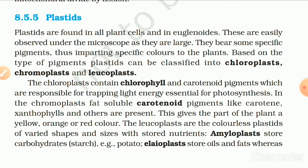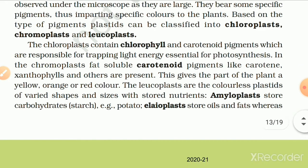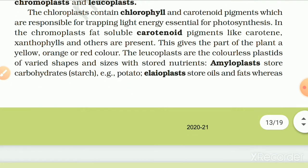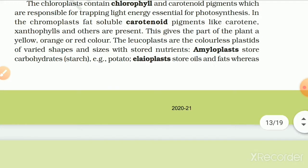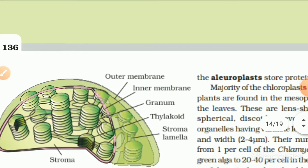8.5.5 Plastids. Plastids are found in all plant cells and in euglenoids. They are easily observed under the microscope as they are large and bear specific pigments imparting specific colors. Based on the type of pigment, plastids can be classified into chloroplasts, chromoplasts and leucoplasts. Chloroplasts contain chlorophyll and carotenoid pigments, which are responsible for trapping light energy essential for photosynthesis. In chromoplasts, fat-soluble carotenoid pigments like carotene, xanthophyll and others are present, giving the plant parts a yellow, orange or red color. Leucoplasts are colorless plastids of varied shape and size with stored nutrients. Amyloplasts store carbohydrates (starch), e.g., potato. Elaioplasts store oils and fats, while aleuroplasts store proteins.